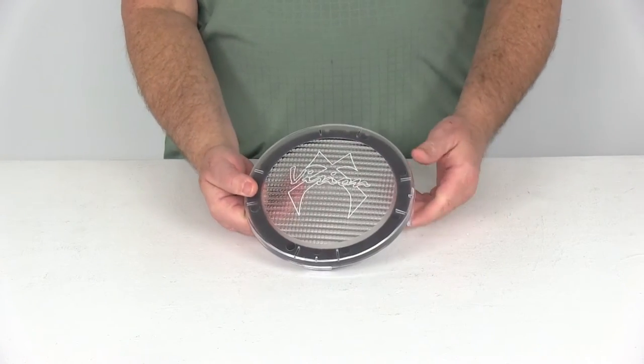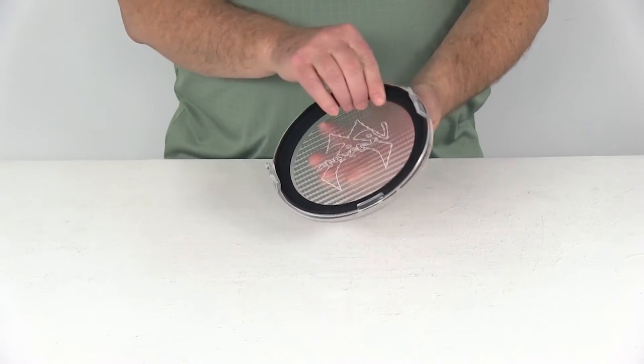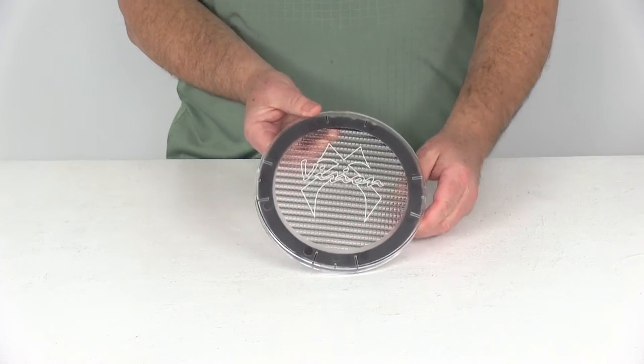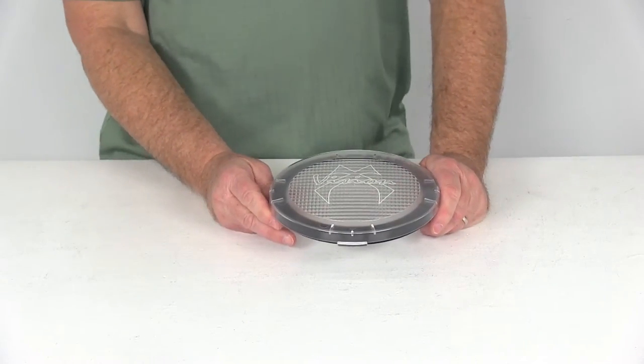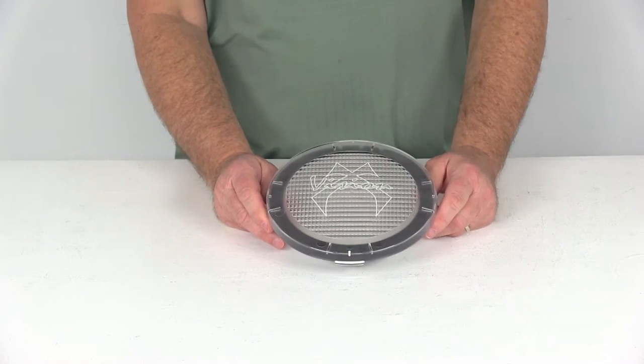Today we're going to review part number PCV-6500FL. This is the VisionX clear flood beam cover for 6.7 inch VisionX cannon and transporter lights.